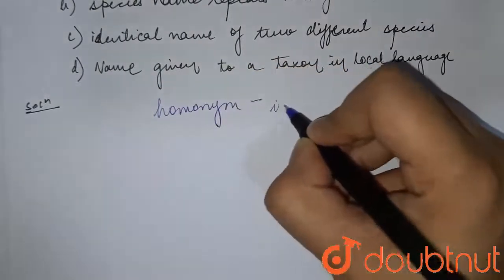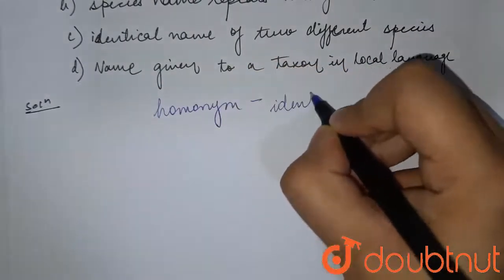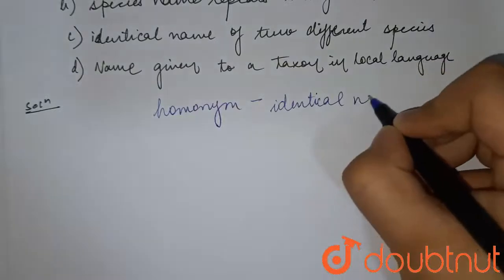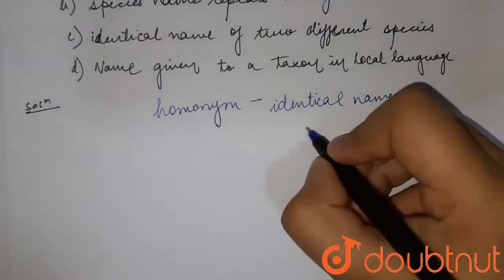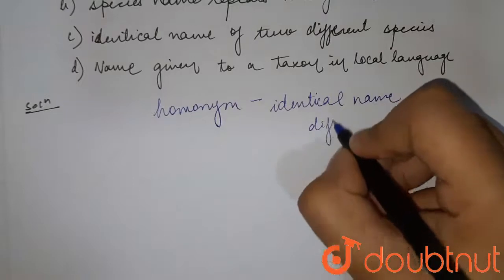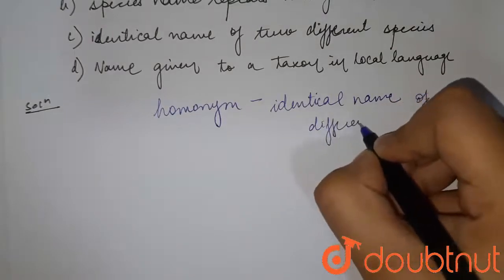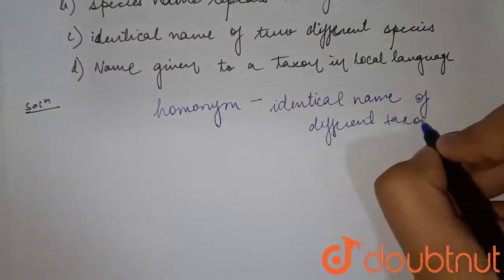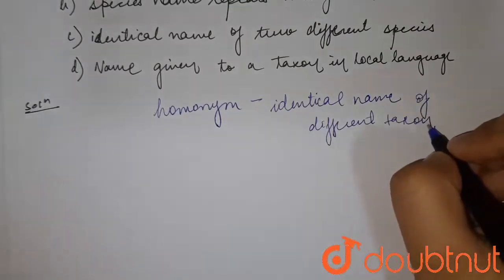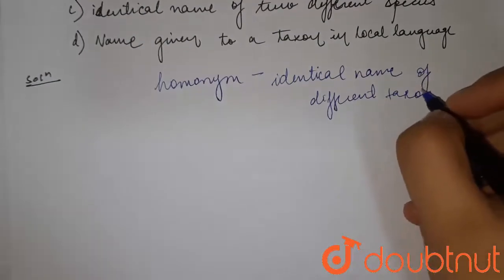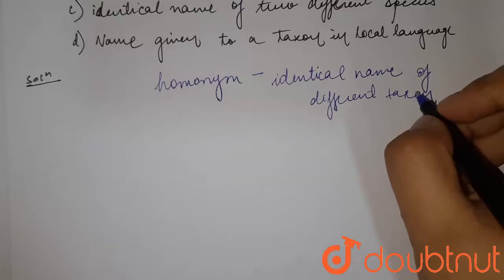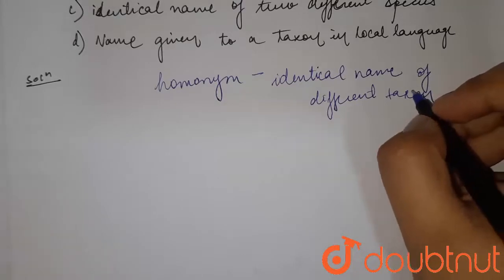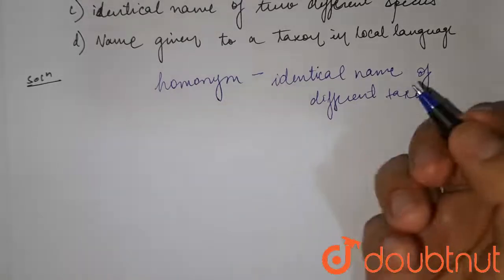It is the identical name of two different taxa. The rules are simple: the first name is known as the senior homonym and it is used as the valid name, while many others are the homonyms which must be replaced with new names.